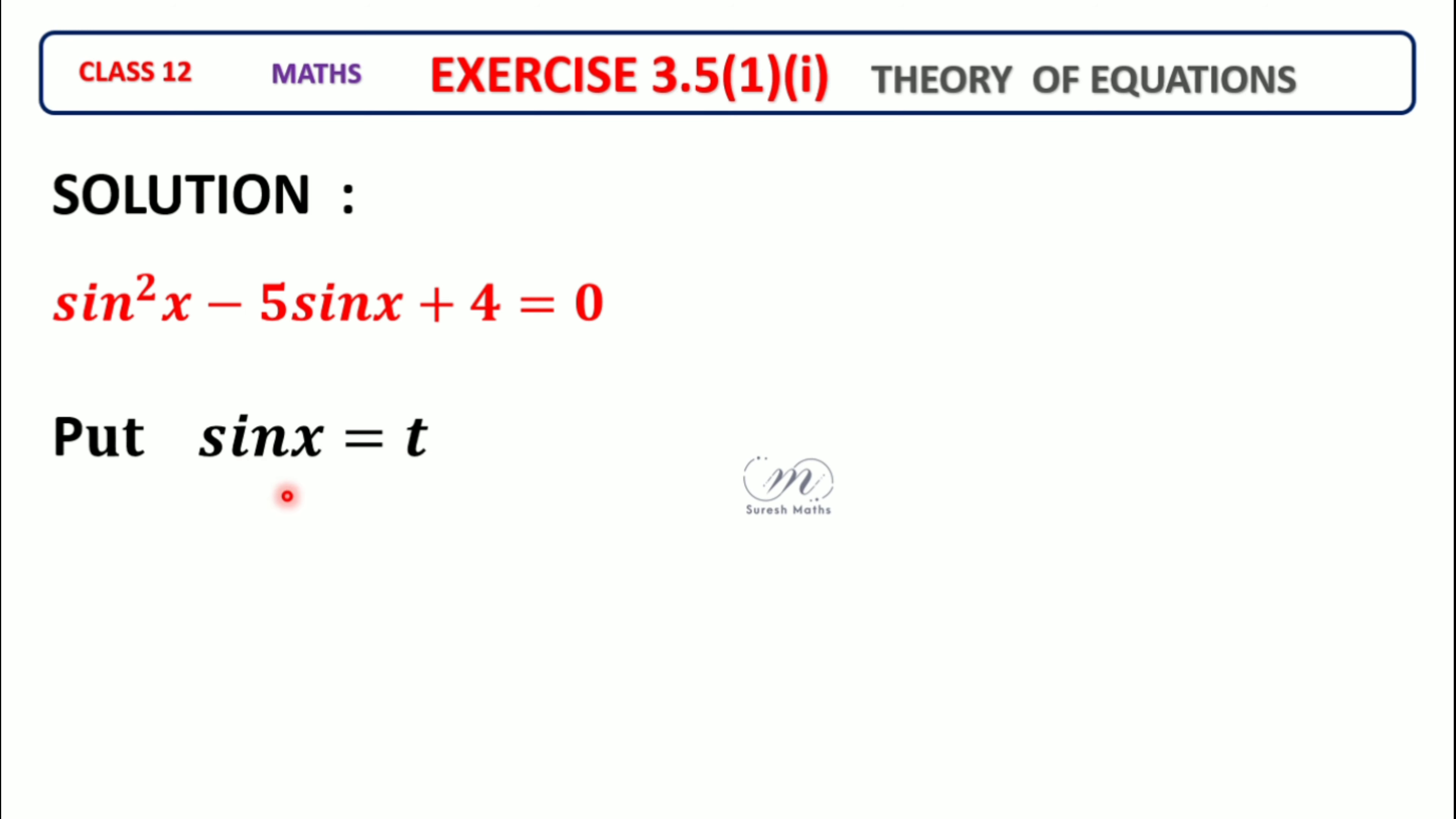This is a quadratic equation. So sin²x becomes t², minus 5sinx becomes -5t. We get t² - 5t + 4 = 0, a quadratic equation in variable t.